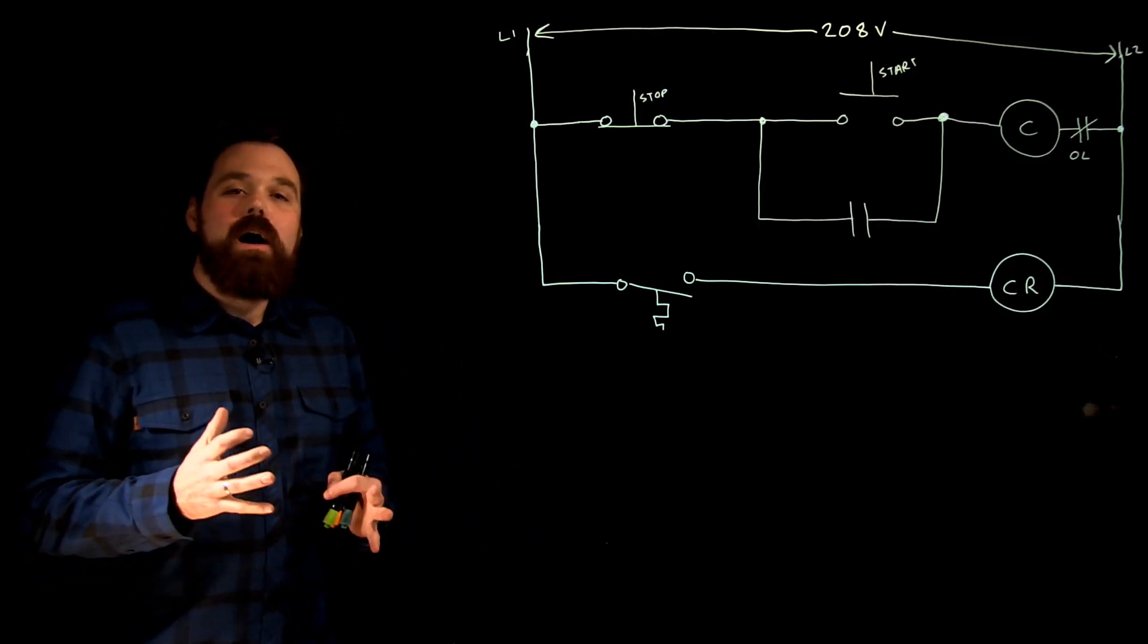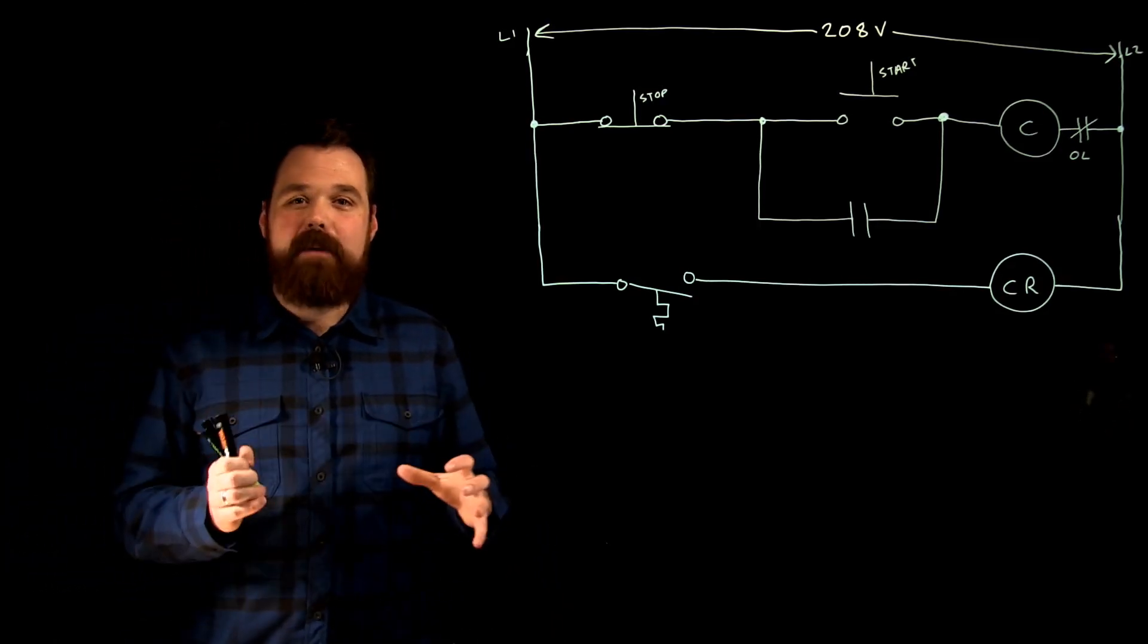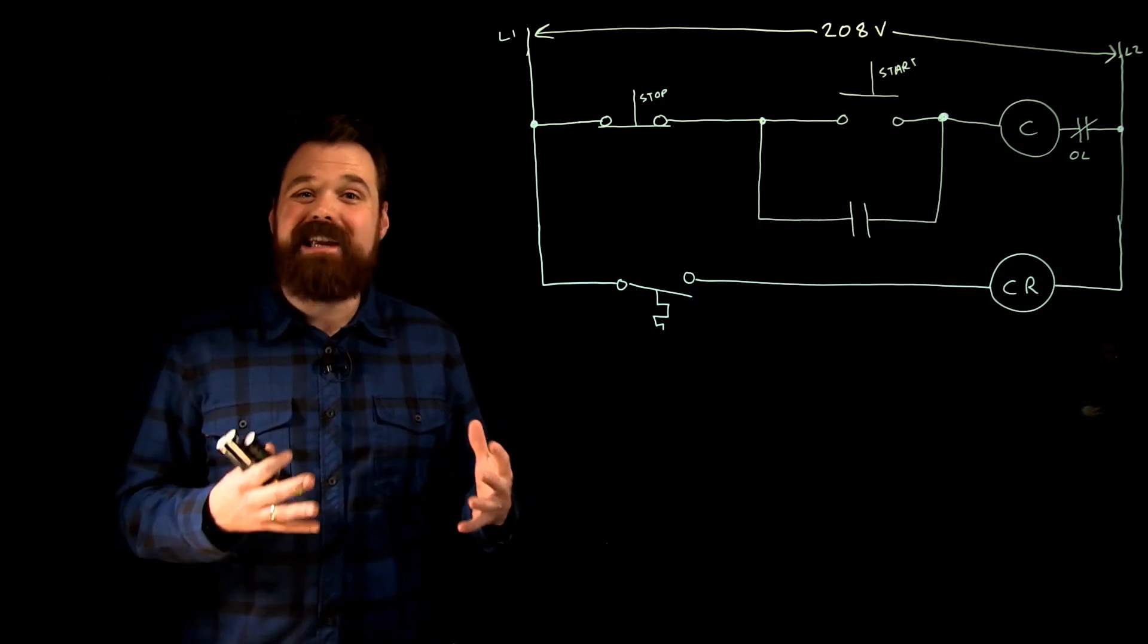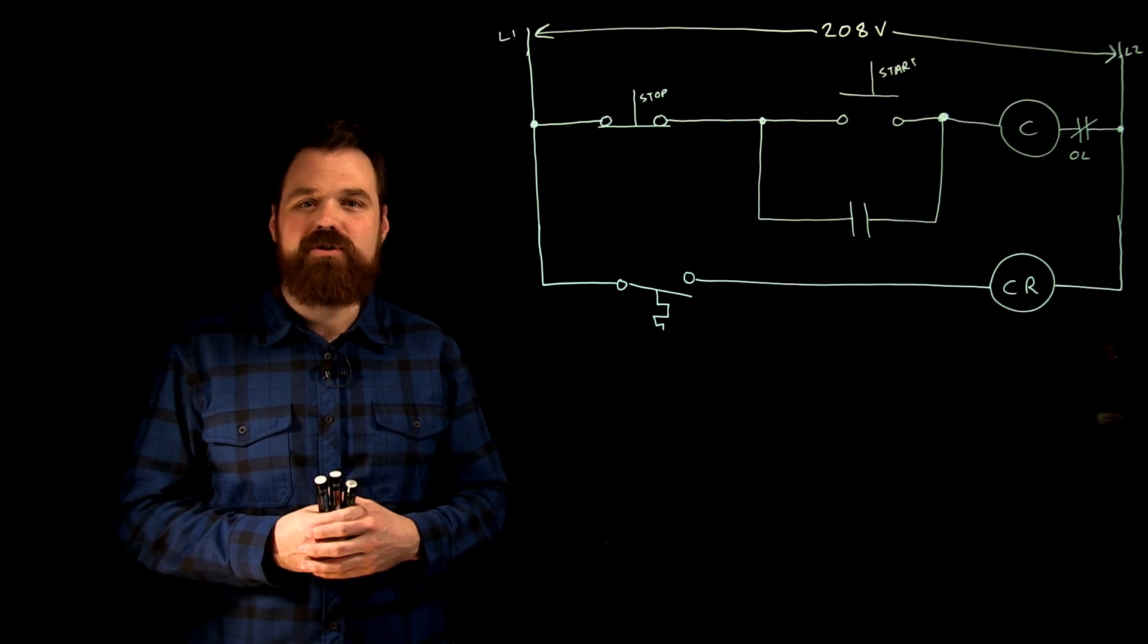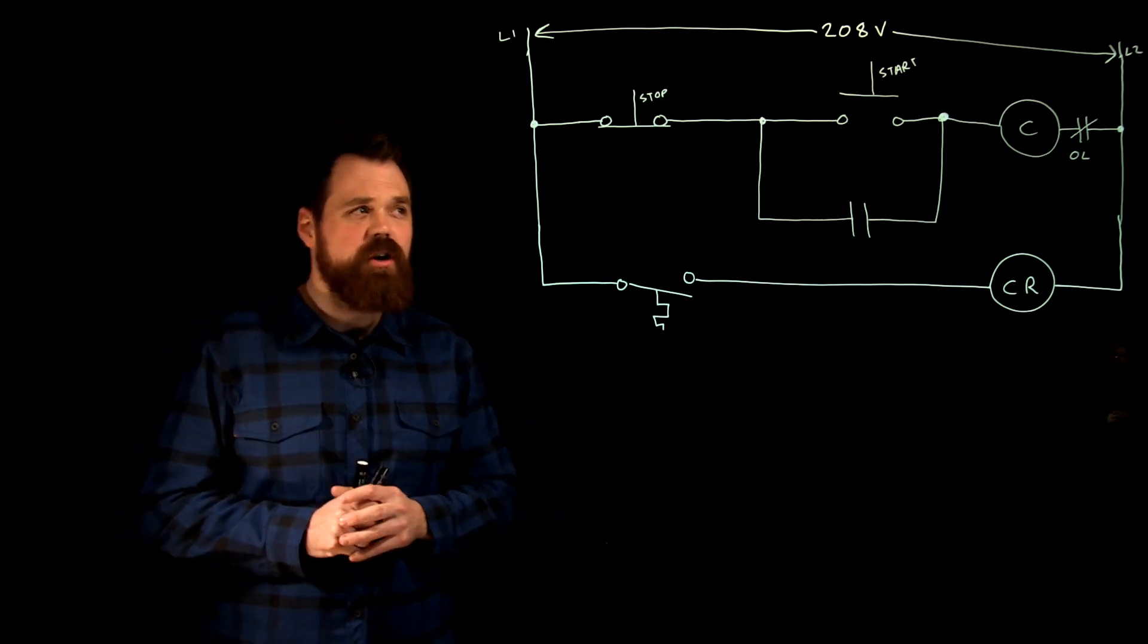Hello everybody. I want to talk today about what happens when we place what we would call an interlock set of contacts into different parts inside of our control circuit and just the effect that would have on the circuit.